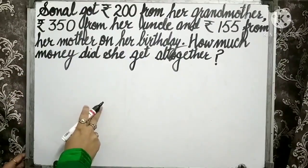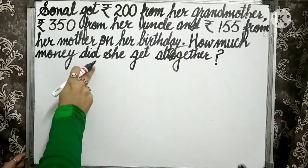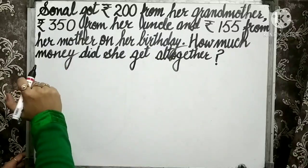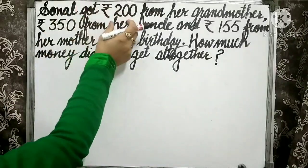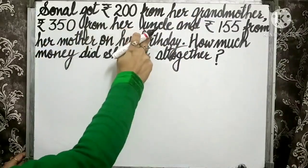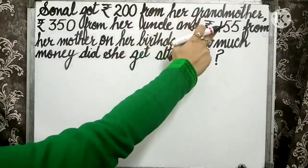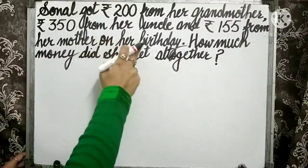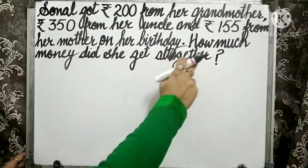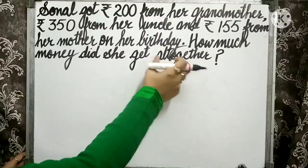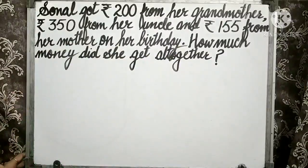Children, the first step to solve any word problem is to read the statement twice. Here we can see that Sonal got some money from her grandmother, some money from her uncle, and another amount from her mother on her birthday. We need to calculate the total amount of money she got on her birthday.